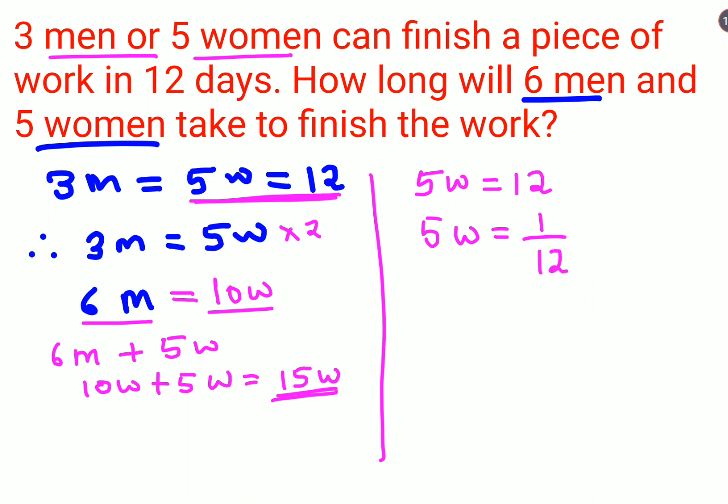Now, we need to find how much 15 women. Yes, I could find for 1 woman and then find for 15 women. But since I know 5 is a multiple of 15, I can directly multiply by 3 to get 15.